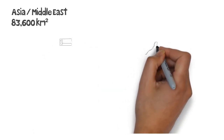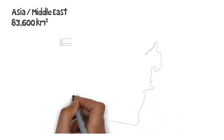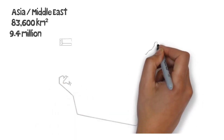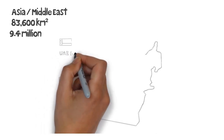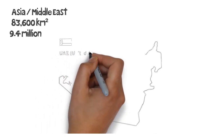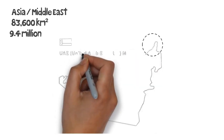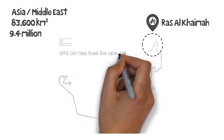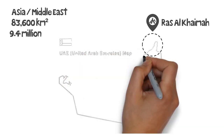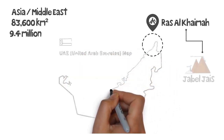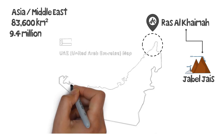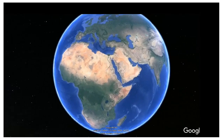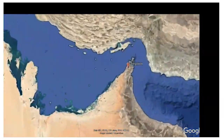Our site is based in the United Arab Emirates, which is located in Asia as part of the Middle East, covering an area of 83,600 square kilometers with a population of around 9.4 million. Our location within UAE is Ras Al Khaimah, one of the seven emirates located in the northern part of UAE. The most preferable place for the camping pavilion is in Jebel Jais.